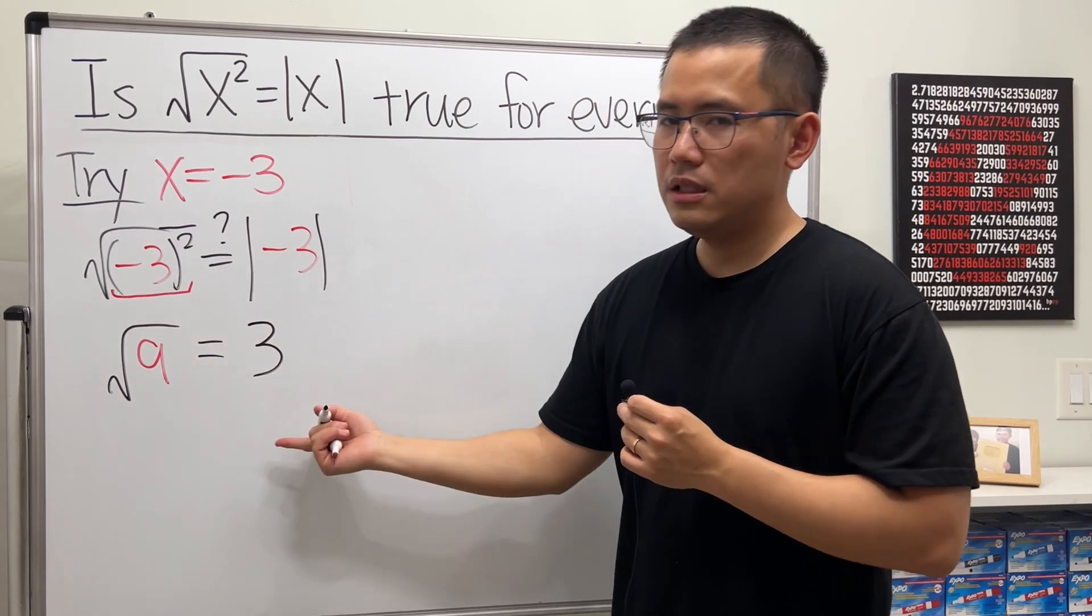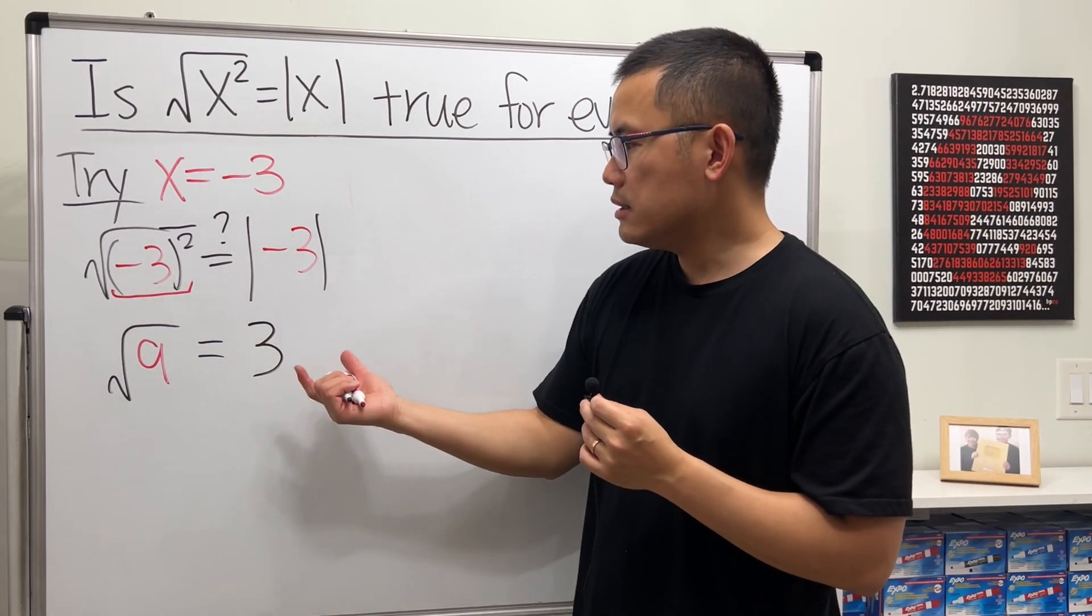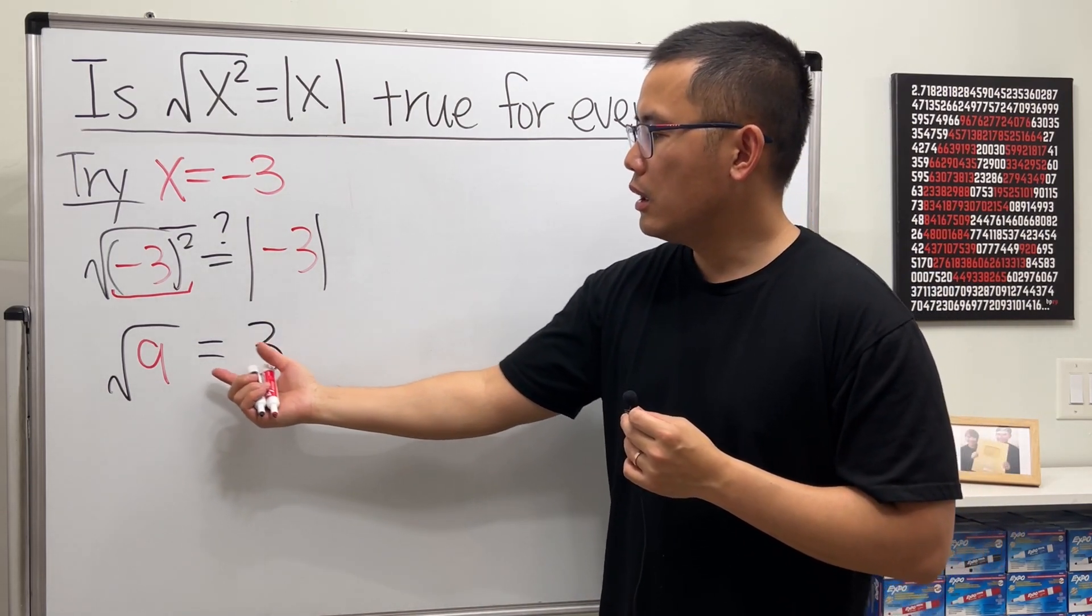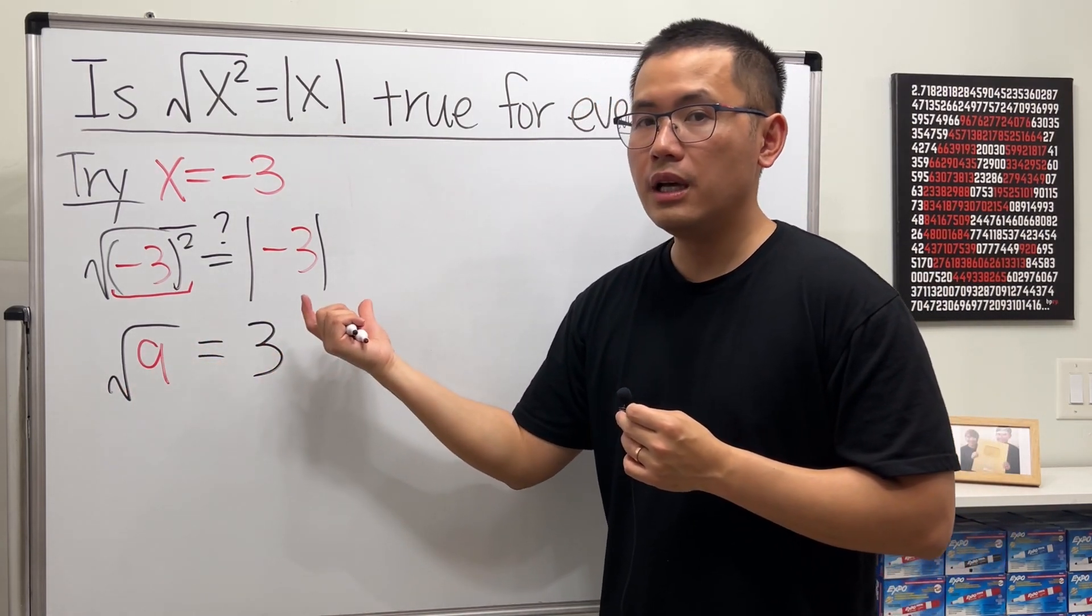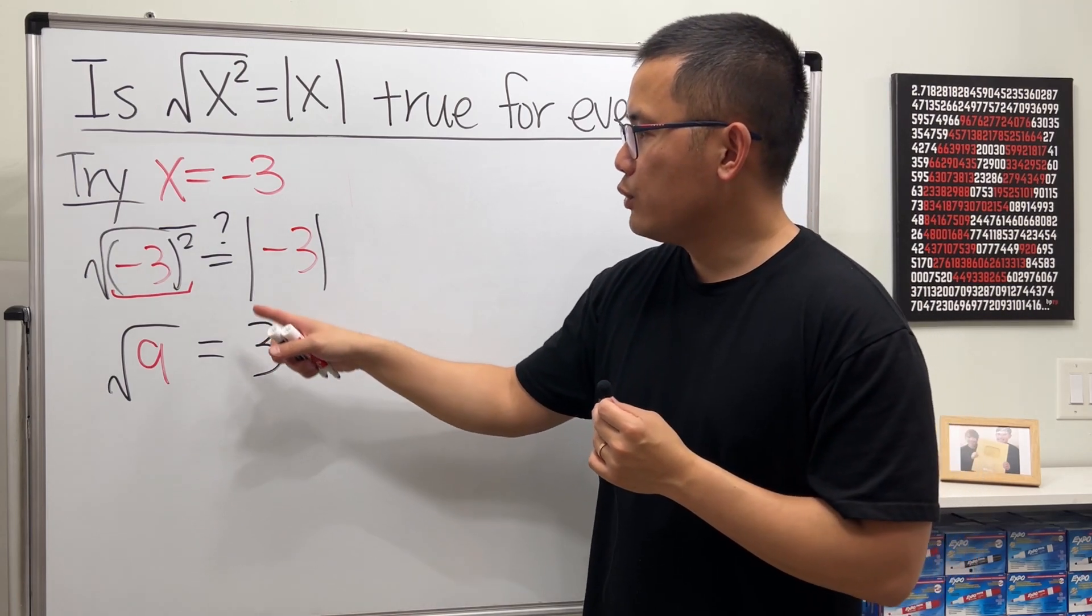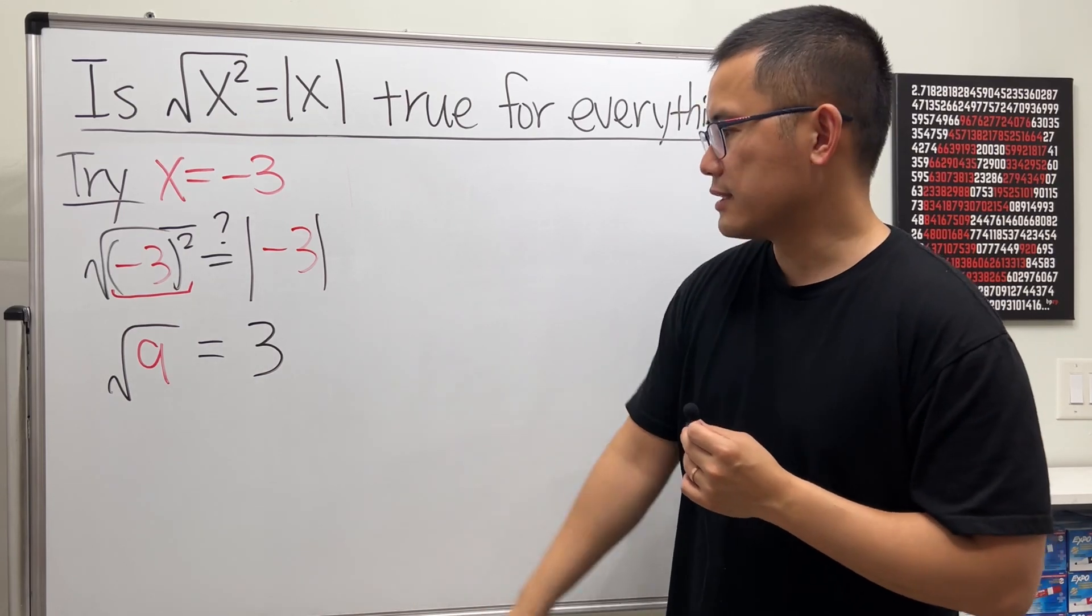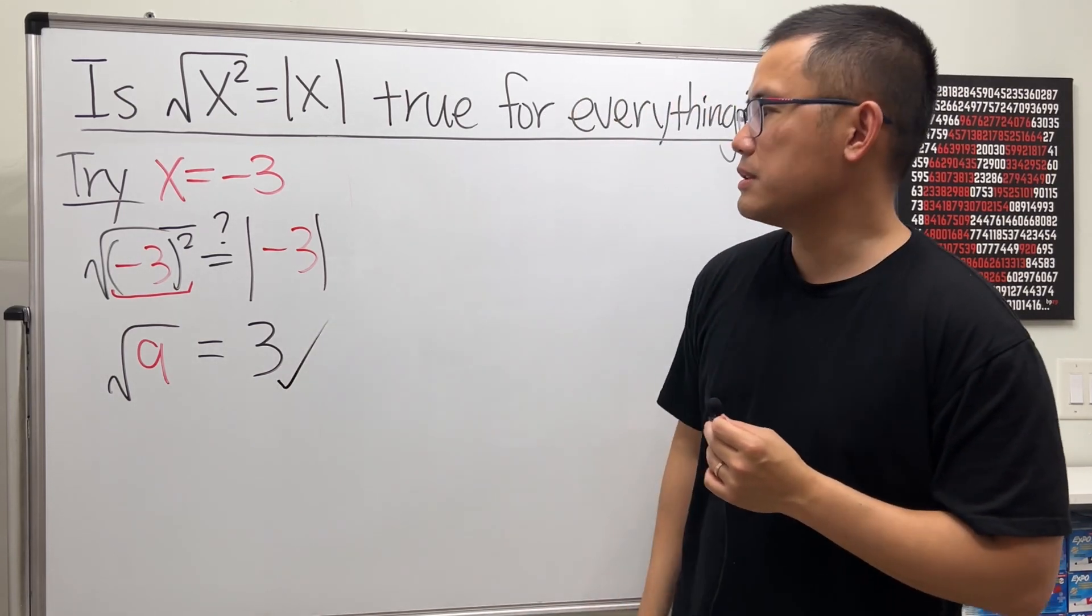Square root of 9 is indeed equal to 3, and this is the reason why we need the absolute value, because we have to ensure the output after a square root to be non-negative. If you don't have the absolute value, then you will say this is equal to negative 3. No, that's not what we want. This right here seems legit.